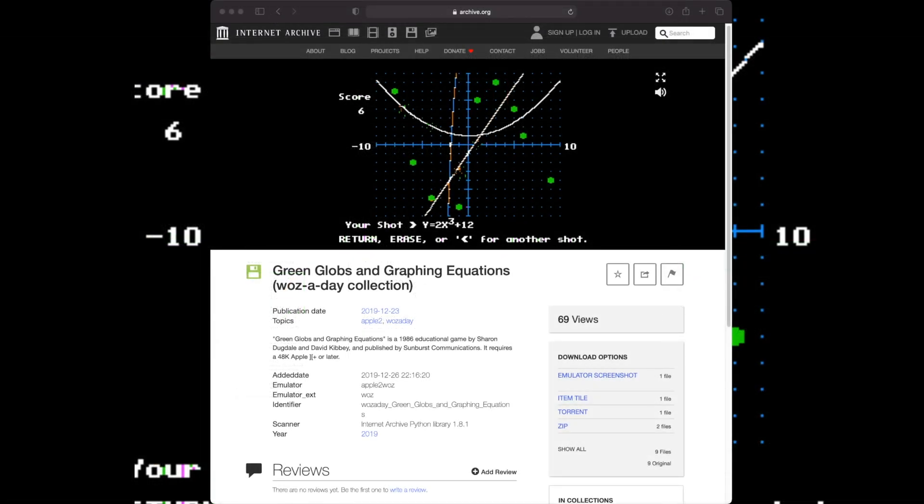That's Green Globs. This has been Gaming Like It's 1979. Thanks for watching.